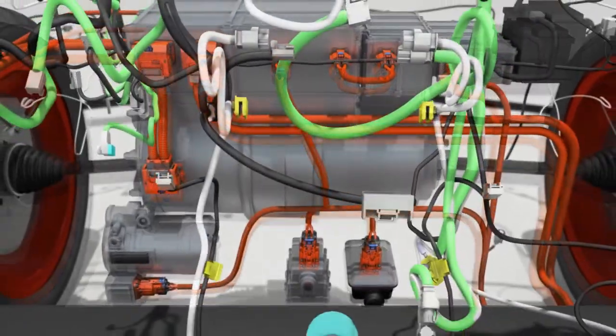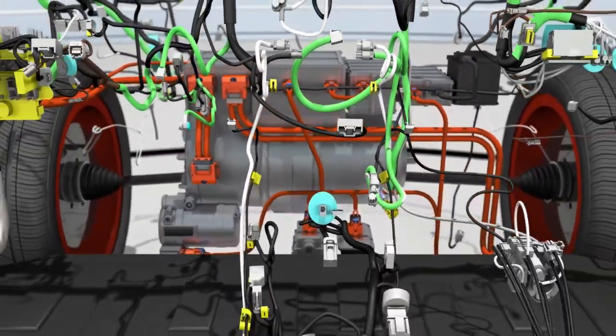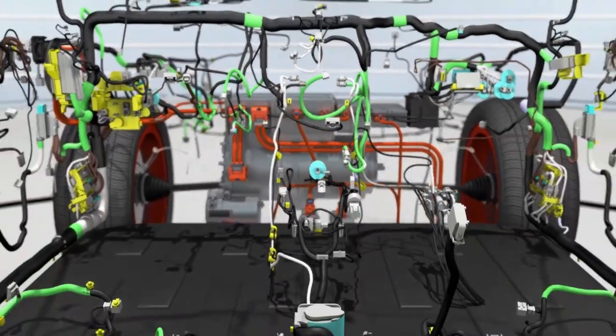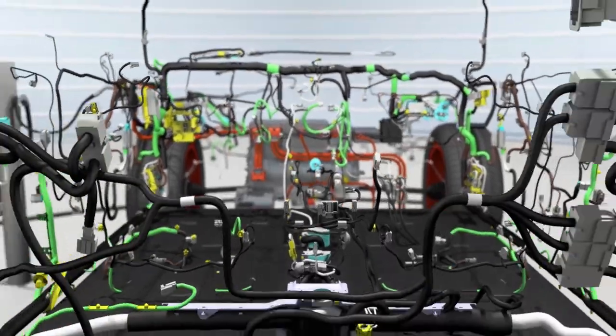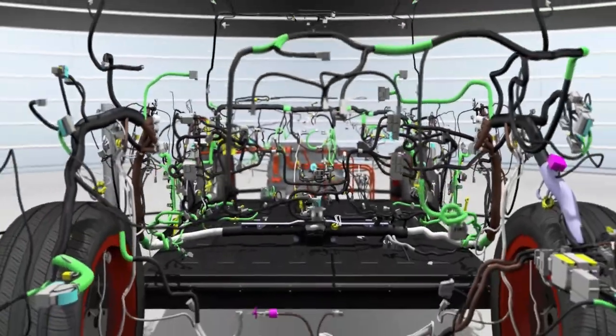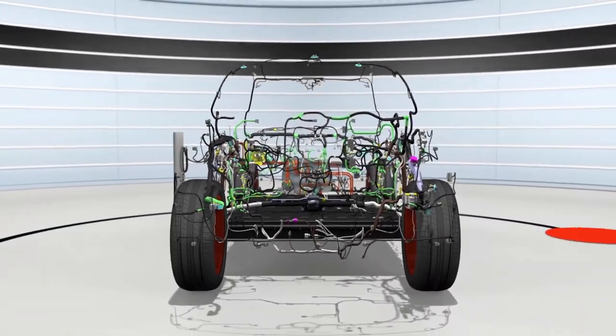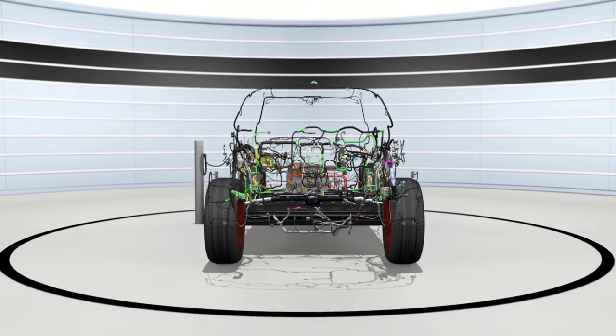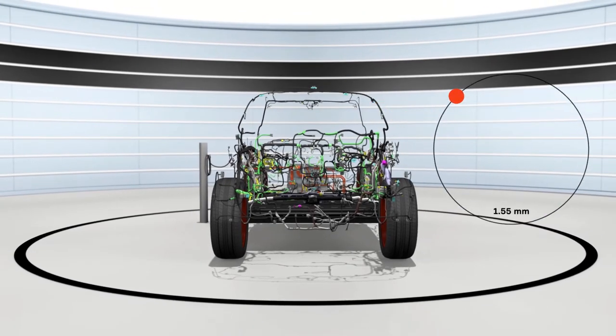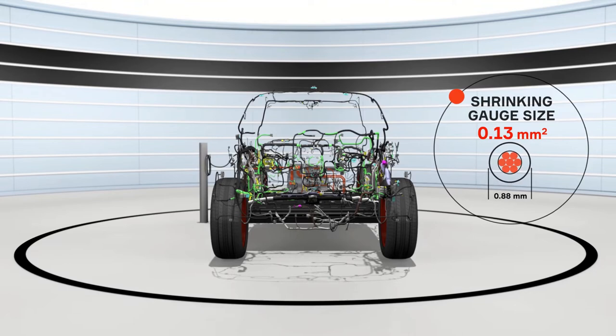But Aptiv electrification expertise does not end there. We are a full system solution provider, which means we optimize all parts of the electrical distribution system, including low voltage. In addition to providing power to auxiliary modules and power conversion, Aptiv's technology is shrinking the gauge size of low voltage wiring to make room for all the components required for an electric vehicle architecture.